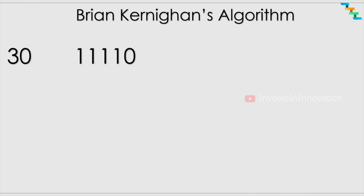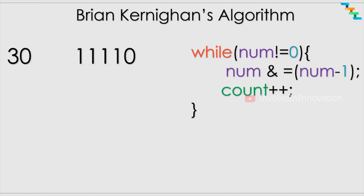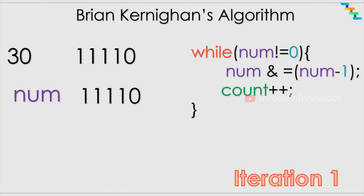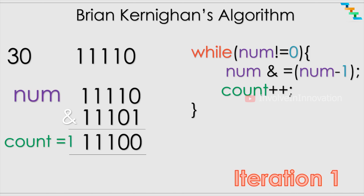Now let's look at the example 30, which has four significant bits set. We subtract 1 from 30 (11110). The rightmost set bit is at index 1, so starting from index 1 everything gets flipped, giving 11101. AND with 11110 gives 11100.